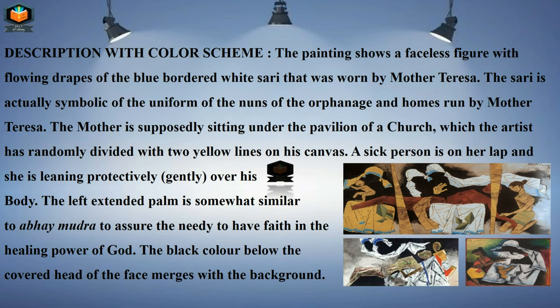The mother is supposedly sitting under the pavilion of a church, which the artist has randomly divided with two yellow lines on his canvas. A Sikh person is on her lap and she is leaning protectively and gently over his body. The left extended palm is somewhat similar to Abhya Mudra, to assure the needy to have faith in the healing power of God.